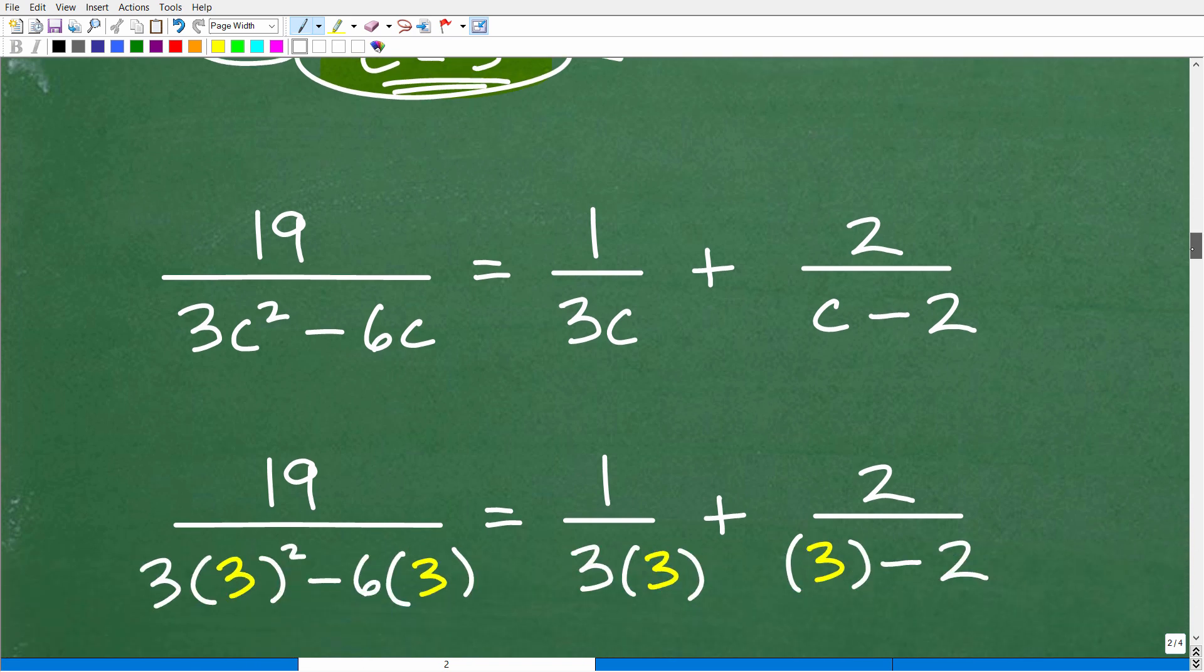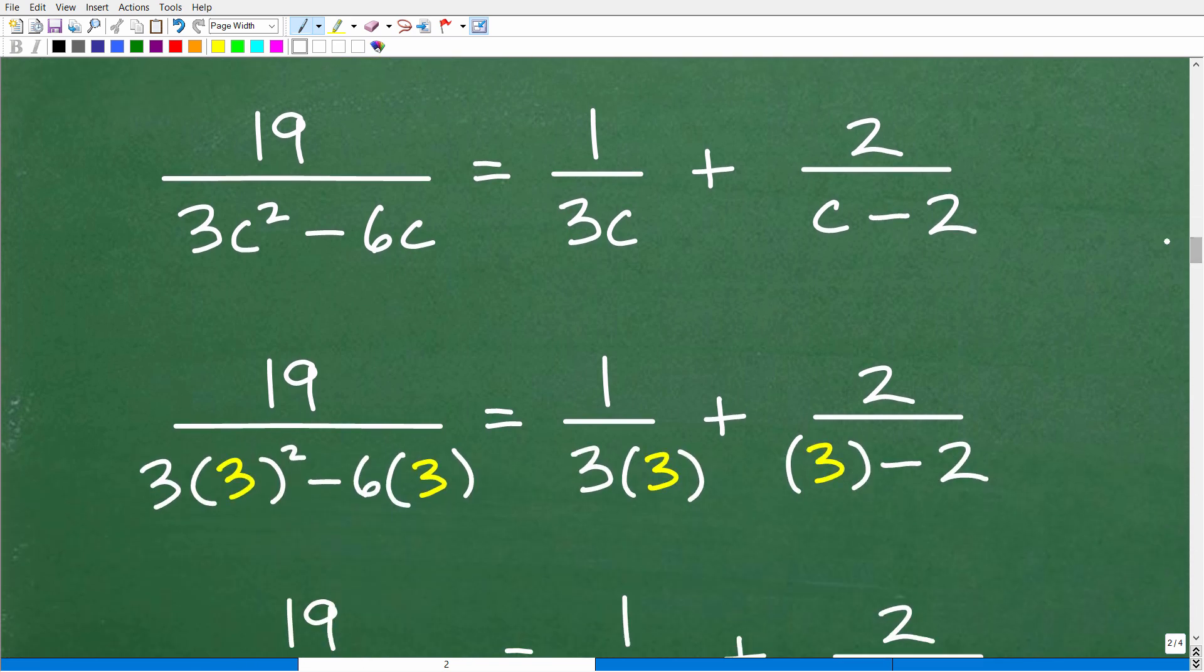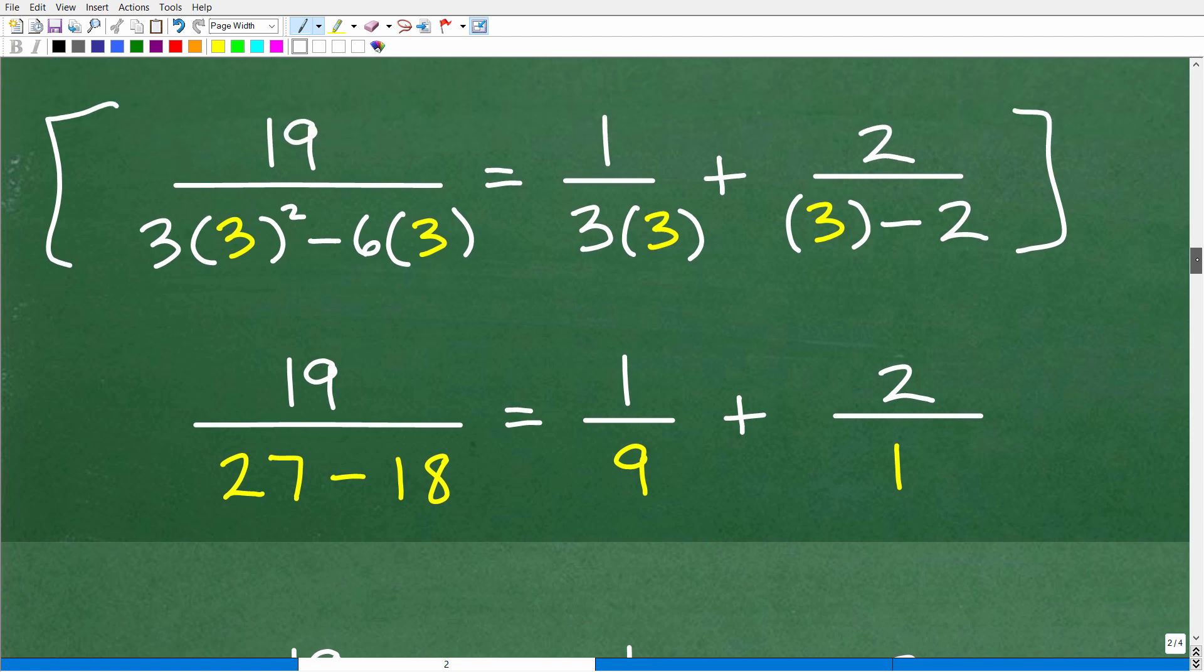So let's go ahead and do that right now. So C is equal to 3. Hopefully that is the answer. So what do I need to do? I need to get that original equation, and I need to plug in 3 everywhere where C is at. And any time you're plugging in a value for a variable, always use parentheses. So you can see the setup here. So I have 19 over 3 times 3 squared minus 6 times 3. We want to see when we do the math on the left-hand side, is that going to be equal to this math on the right-hand side?